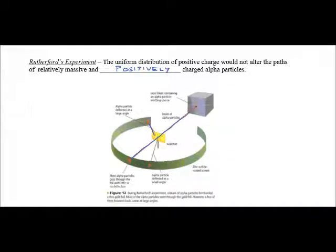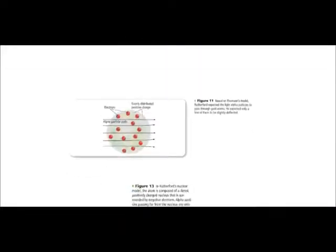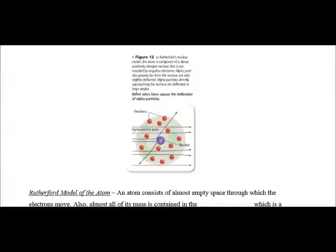And from this, he modified the Plum Pudding Model into the Rutherford Model. The way Rutherford explained his experiment was that alpha particles would pass straight through most of the time, but occasionally there was a deflection where the alpha particle bounced off of something extremely heavy and dense.